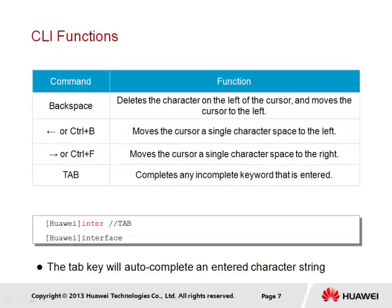Some other command line interface functions include the backspace, which deletes the character to the left of the cursor and moves the cursor left, as seen in many other applications. The left arrow key and Ctrl-B perform the same function, moving the cursor a single character space to the left. The right arrow key and Ctrl-F perform the same function but to the right. Finally, the tab key completes any incomplete keyword that is entered. We demonstrate this at the bottom — the keyword 'inter' is not complete, however it is a unique key prefix, and once we press tab it will identify and auto-complete the full keyword 'interface'.